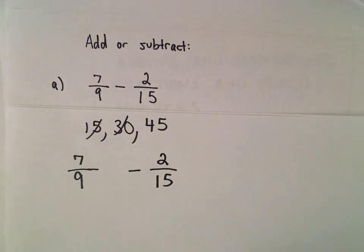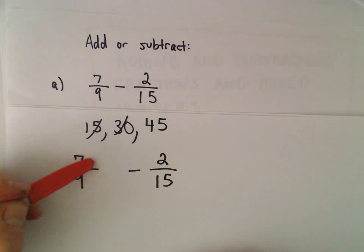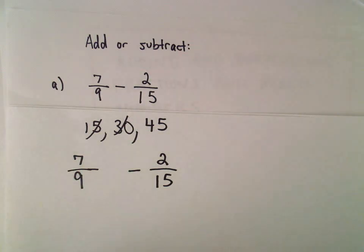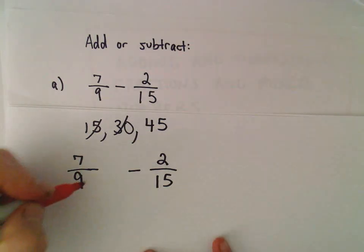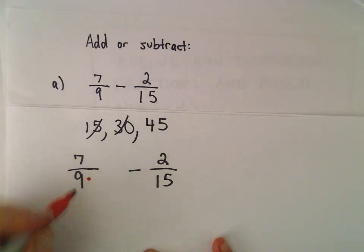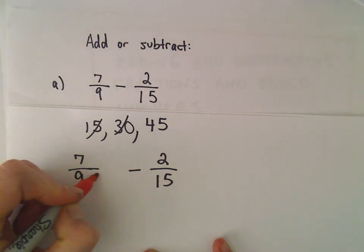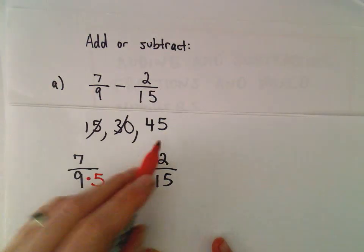So now I'm thinking, I want a 45 in my denominator. So what do I have to multiply the first denominator by to get a 45? Well, 9 times 5 is going to give us 45.